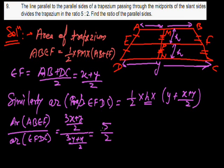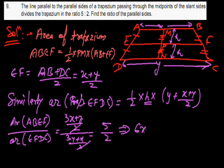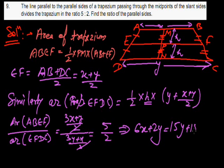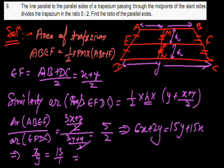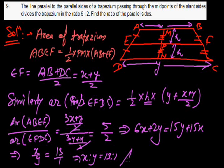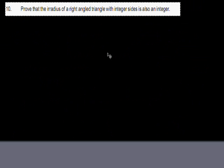Given the ratio is 5:2, solving gives 6X + 2Y = 15Y + 5X, so the ratio X to Y = 13:1. The ratio of the parallel sides is 13 is to 1.